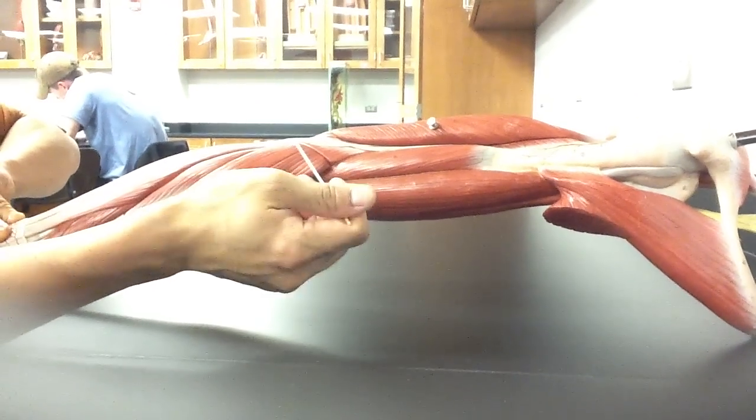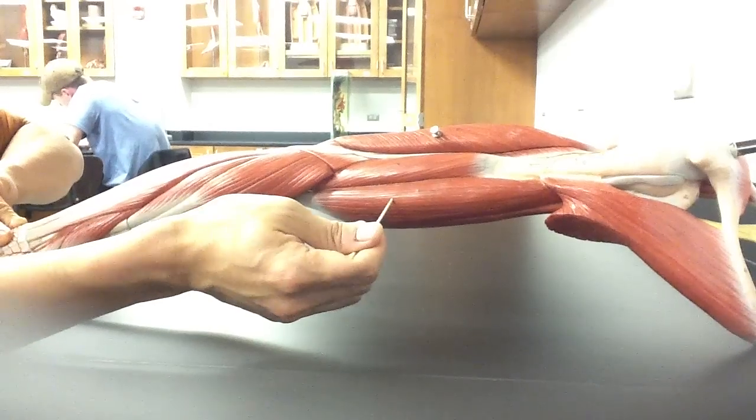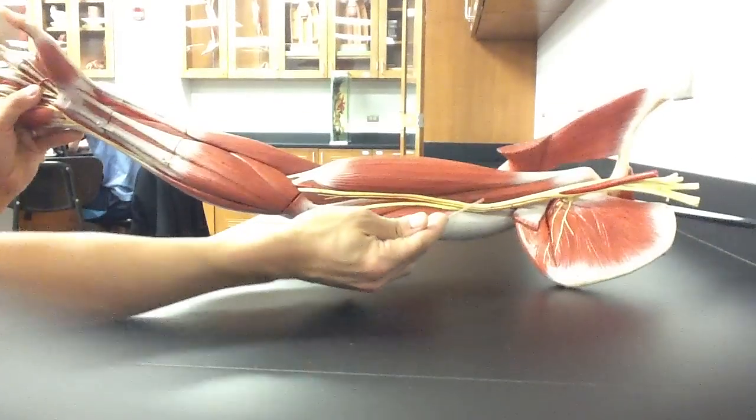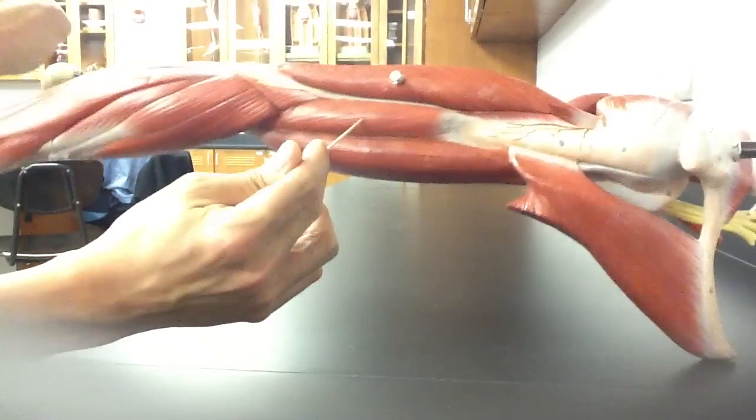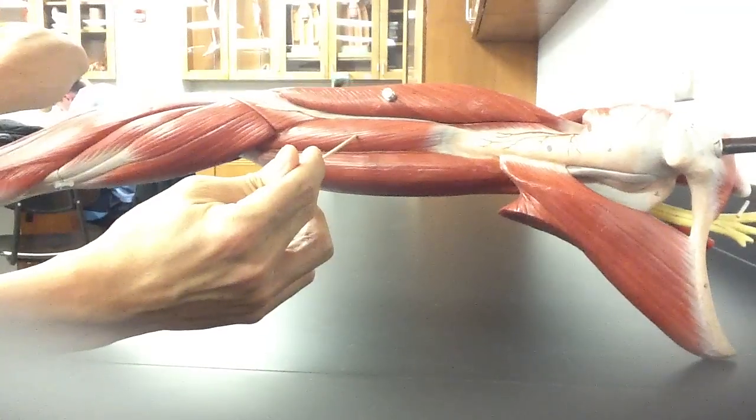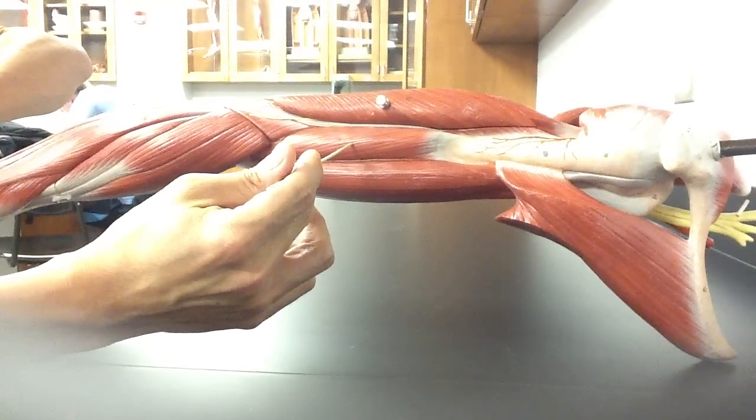Notice the running theme: brachy, brachy, brachy. Biceps brachii, coracobrachialis, brachialis. Those are our three anterior muscles of the anterior arm.